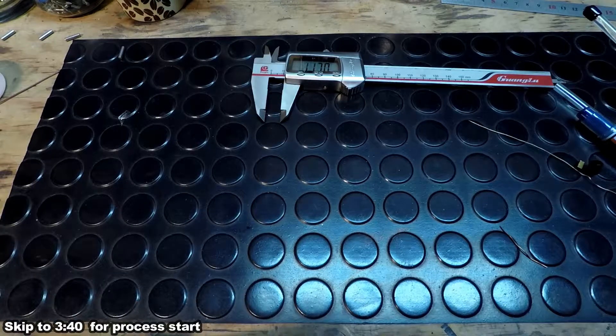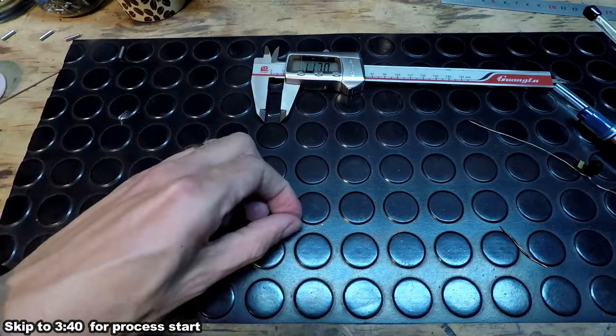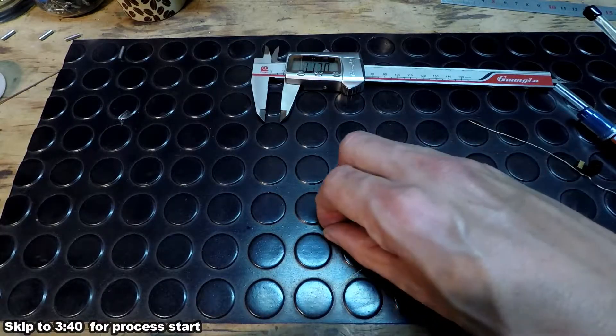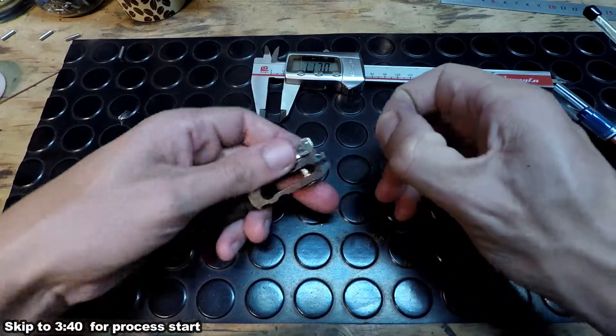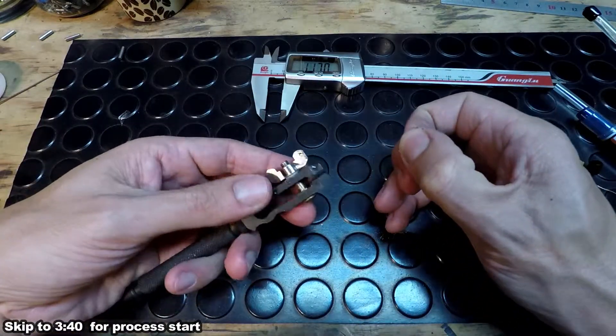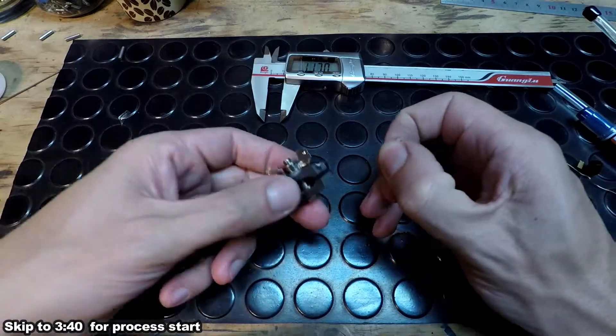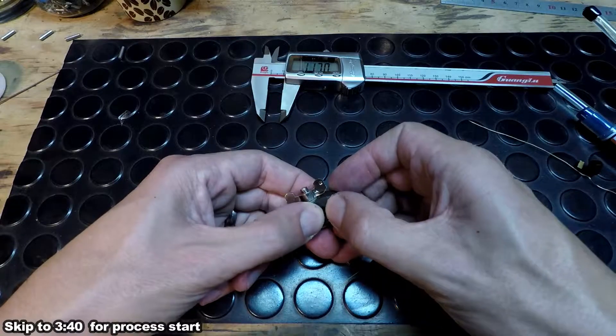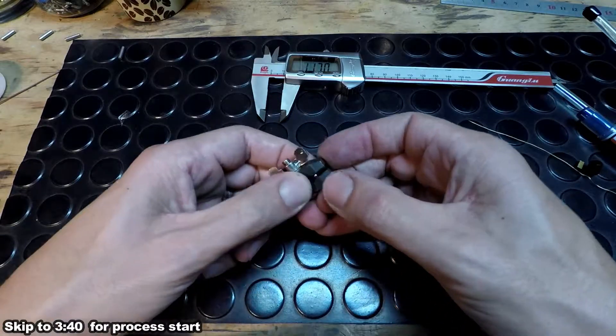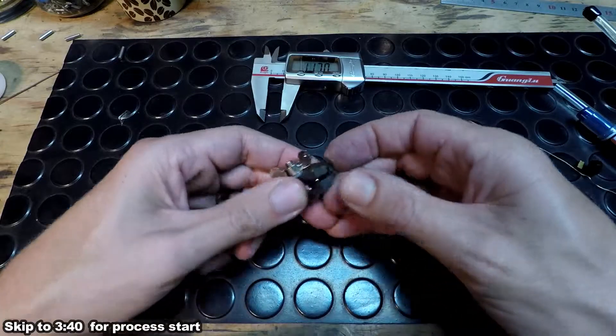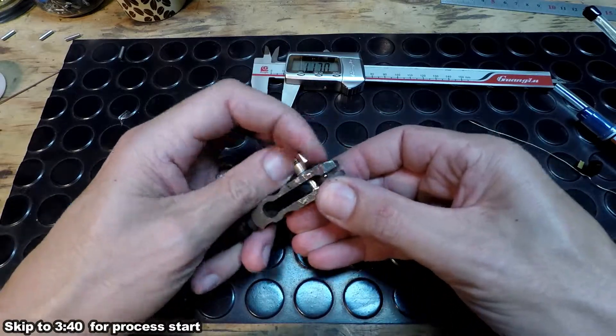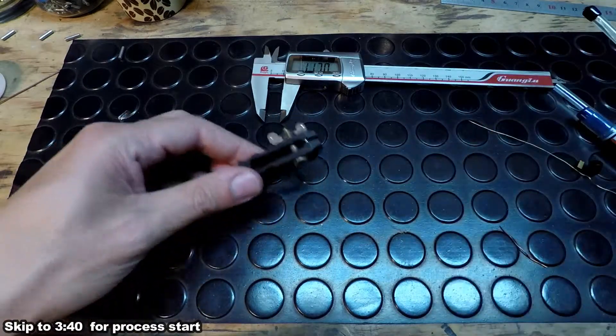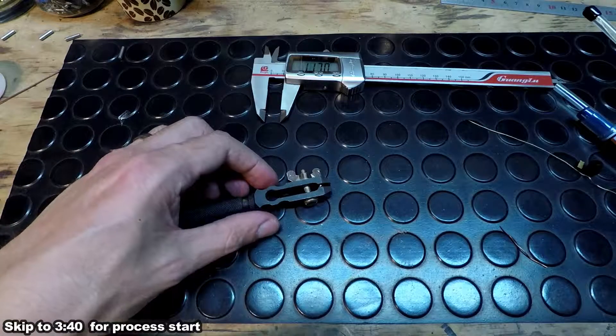First thing we need to do is get the little bearing into something that can actually hold it. I've got this little clamp. I got it at some watch company. Some hobby shops should have it as well. I'm not exactly sure what it's used for but it's pretty handy for holding tiny little parts and bearings.